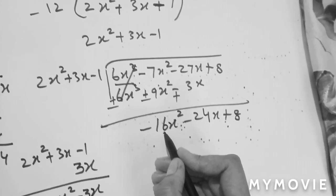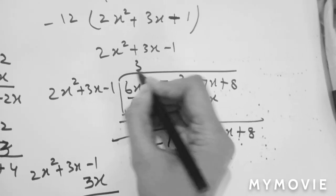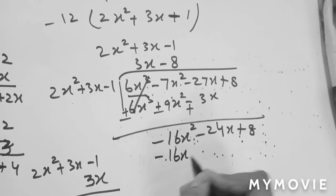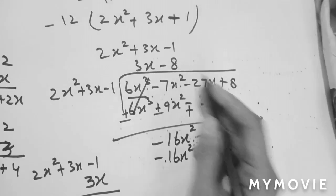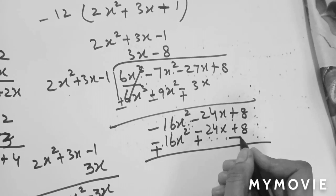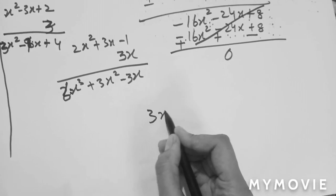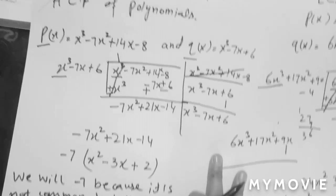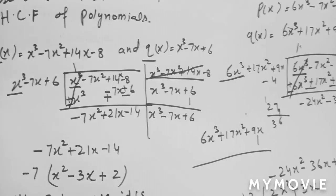Now we make minus 16x² from 2x². We multiply by minus 8: minus 8 times 2x² = minus 16x²; minus 8 times 3x = minus 24x; minus 8 times minus 1 = plus 8. We write minus 16x² - 24x + 8 and subtract — everything crosses out. The answer is 3x - 8. I hope you will like this video. If there is any problem, kindly inform me. Thank you so much, bye bye.